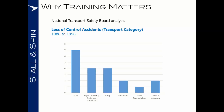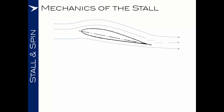So firstly, why do we train for this? The National Transport Safety Board of the United States analyzed loss of control accidents in the transport category from 1986 to 1995 to understand the root cause of the upset. As you can see from the graph, stalling came out as the number one cause of loss of control accidents. Indeed, Air France 447 and Colgan Air 3407 are two tragic and very prime examples highlighting the importance of recognizing when the aircraft is stalled and how to effectively recover.